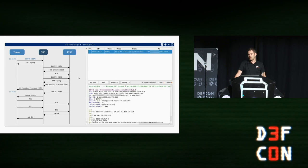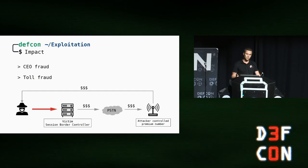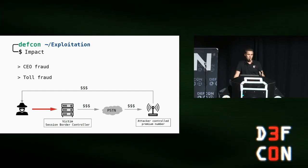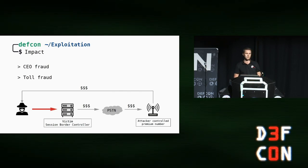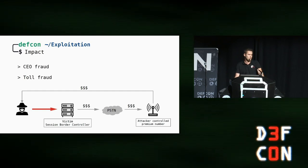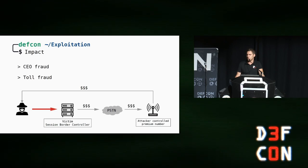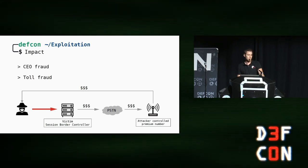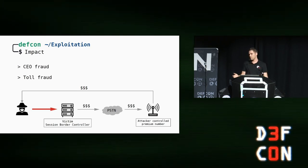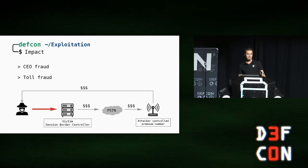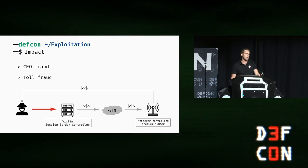Now you may ask yourself, what's the impact of this issue? There are two major problems here. First, we are now able to act as the victim to perform CEO fraud or other social engineering attacks. And second, the more serious and common attack is toll fraud. The attacker uses this security issue to perform calls through the victim's telephone account with the destination of a premium phone number under the attacker's control, and therefore he gets the money. We had customers who were affected by such attacks, which resulted in explosive telephone bills within tens of thousands of dollars.